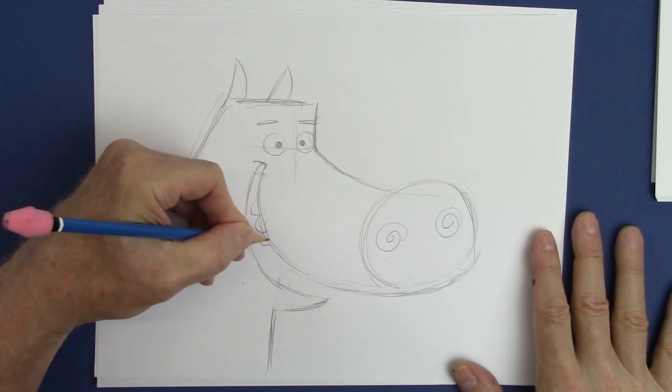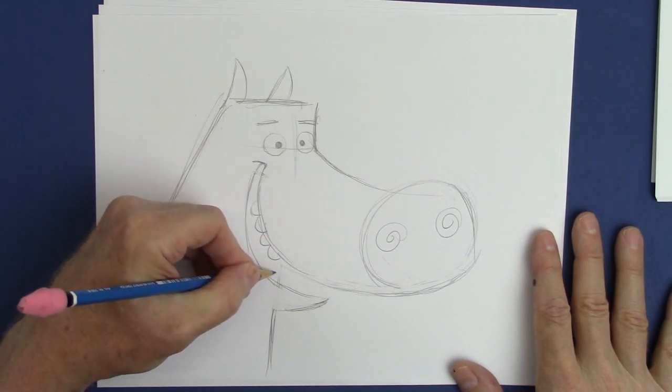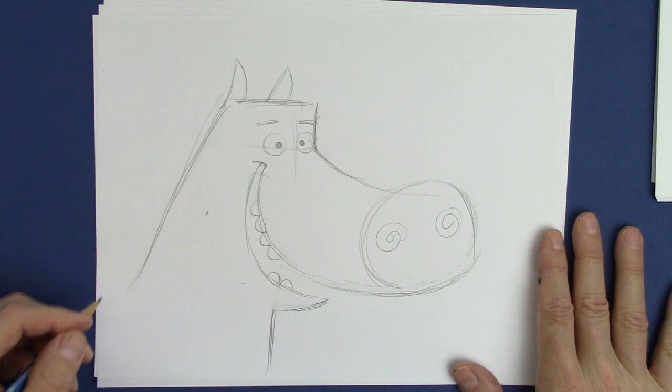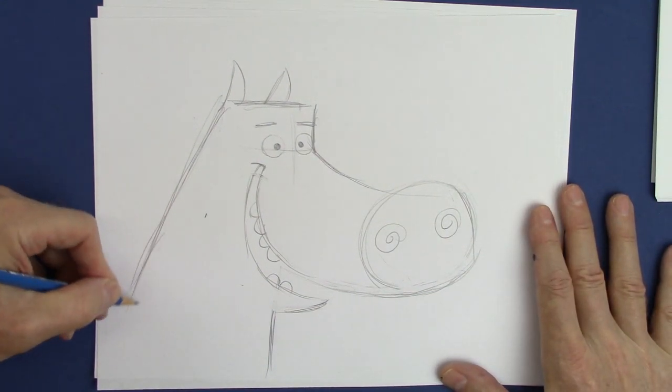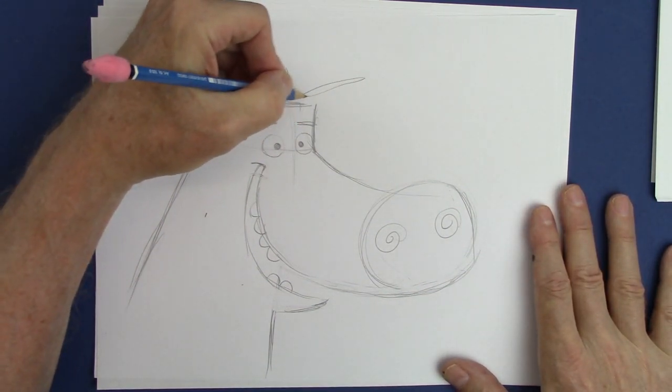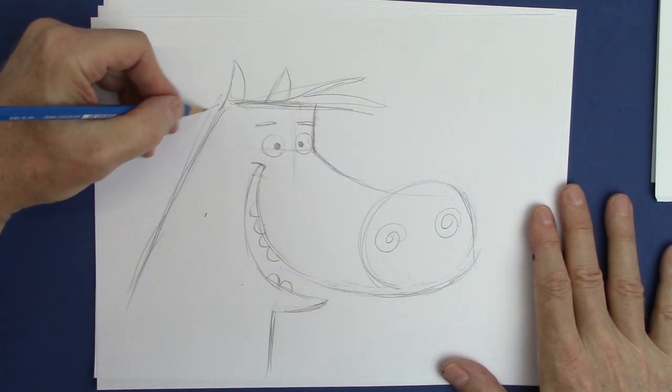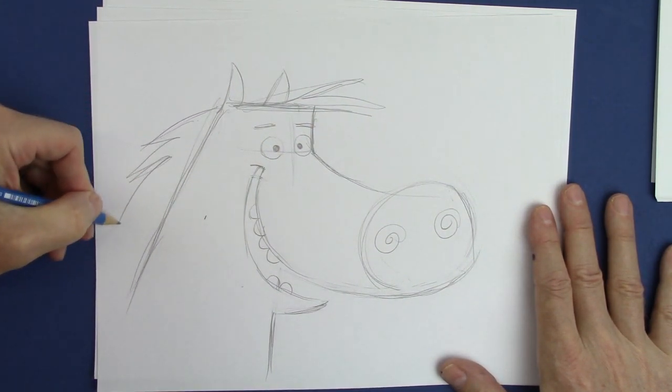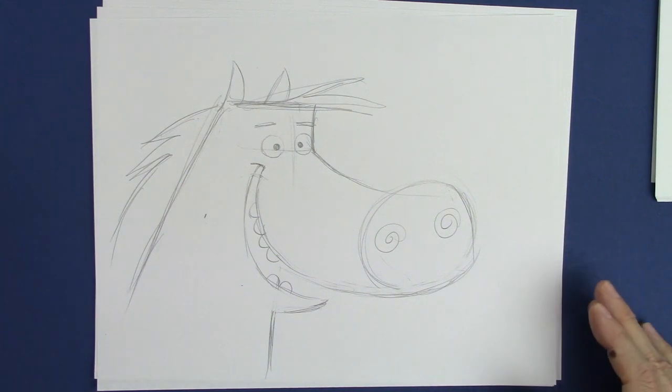And some rounded teeth on top and bottom. Here we go. I will darken this in in a moment. A little bit of hair coming forward and the back. Alright, you ready?